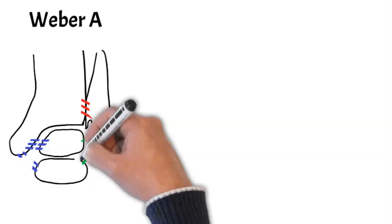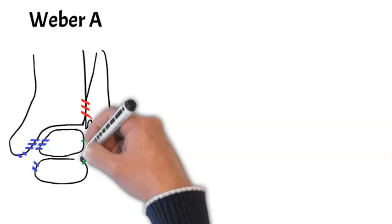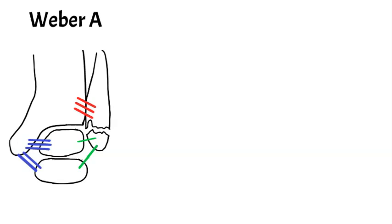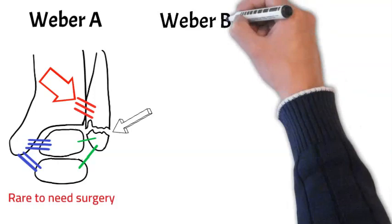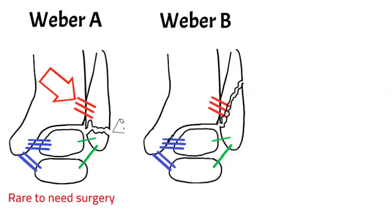These fractures are classified according to something called the Weber classification. Weber A is a very minor one — it's below the level of the joint, just below the level of the syndesmosis. A Weber A fracture rarely needs surgery; usually the patient would be walking in a boot. So it's unlikely Jackson Hastings has that injury, as it's been said that he needs surgery. The more likely injury is a Weber B fracture, which is a fracture of the fibula at the level of the syndesmosis.